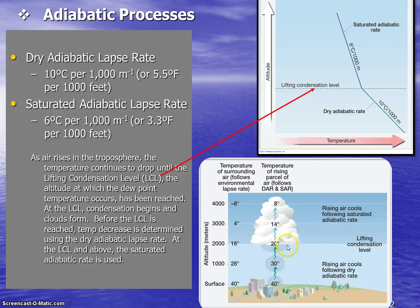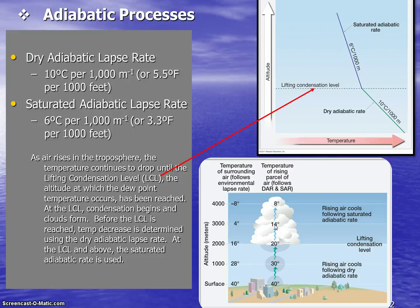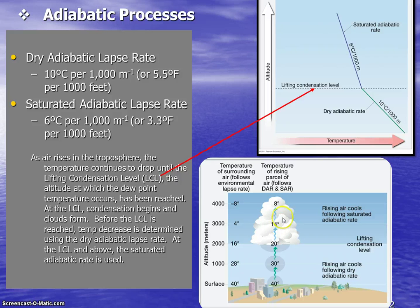At 2000 meters in this example, we've reached the lifting condensation level. Now we switch to the saturated adiabatic lapse rate. From 2000 meters up to 3000 meters, we subtract only 6 degrees Celsius — so 20 minus 6 is 14 degrees at 3000 meters. Continuing at the saturated rate, subtract 6 from 14 and the temperature at 4000 meters will be 8 degrees Celsius.